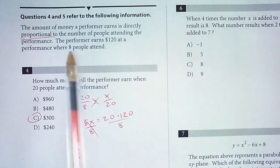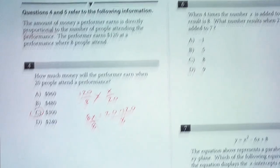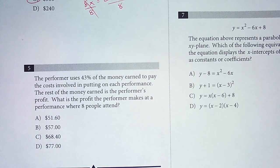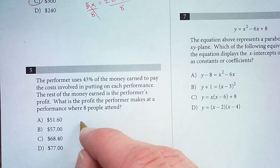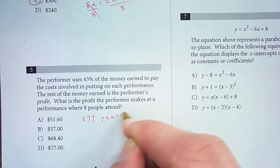So when there are 8 people in attendance, the performer earns $120, but 43% of that goes toward costs. So what percent is profit? If 43% goes toward costs, then that means 57% is profit.